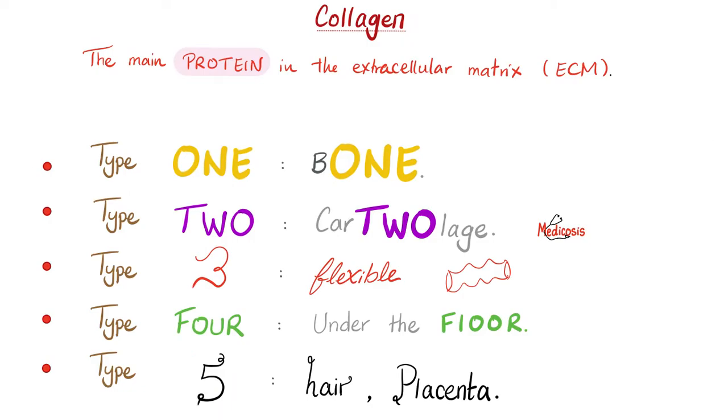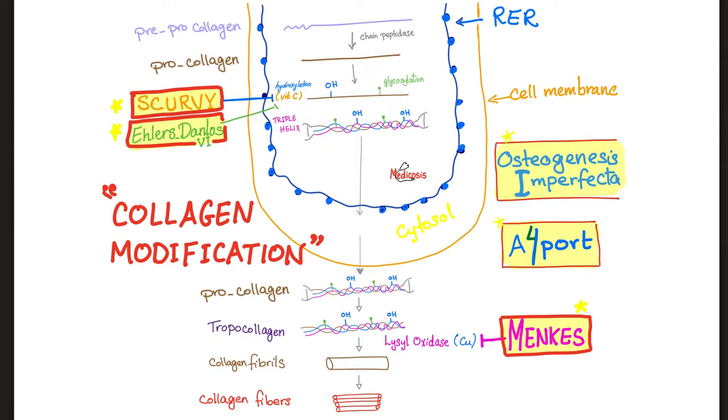Let's talk more about collagen, which is a structural protein. We have many types of collagen, including type 1 collagen is in bone. Type 2 is in cartilage. Type 3 is very flexible. Blood vessels. Type 4 under the floor, I mean the basement membrane. Type 5 is for hair and placenta. Here is how you make collagen. Recall, it started as pre-procollagen and then procollagen and then you hydroxylate the proline and lysine residues. Before you know it, you have the famous triple helix or tri-helix of collagen.